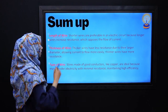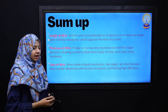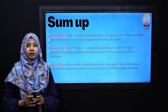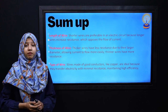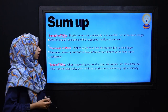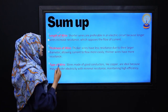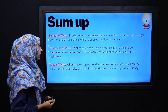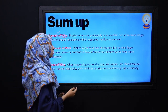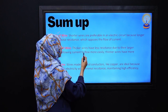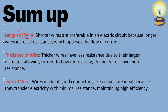Very good. I hope that the worksheet was easily solved. Now let's move towards the sum-up. In today's lecture, we have three most important factors. Number one was the length of wire. Shorter wires are preferable in an electric circuit because longer wires have greater resistance, which opposes the flow of current.